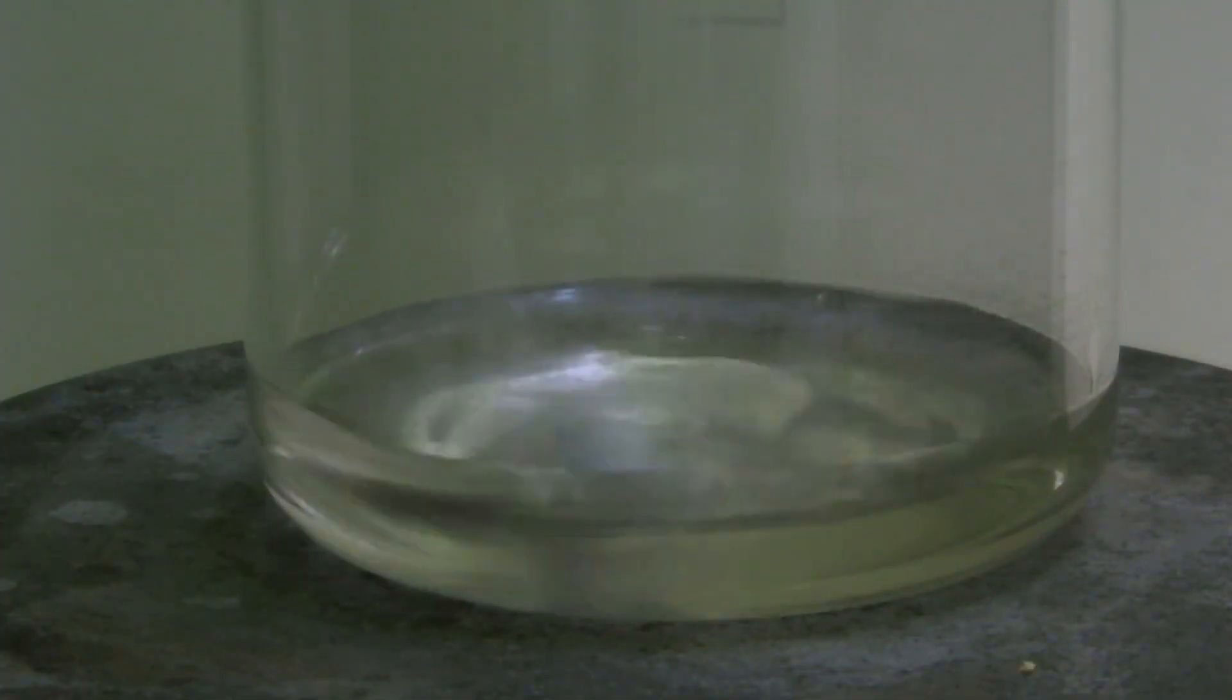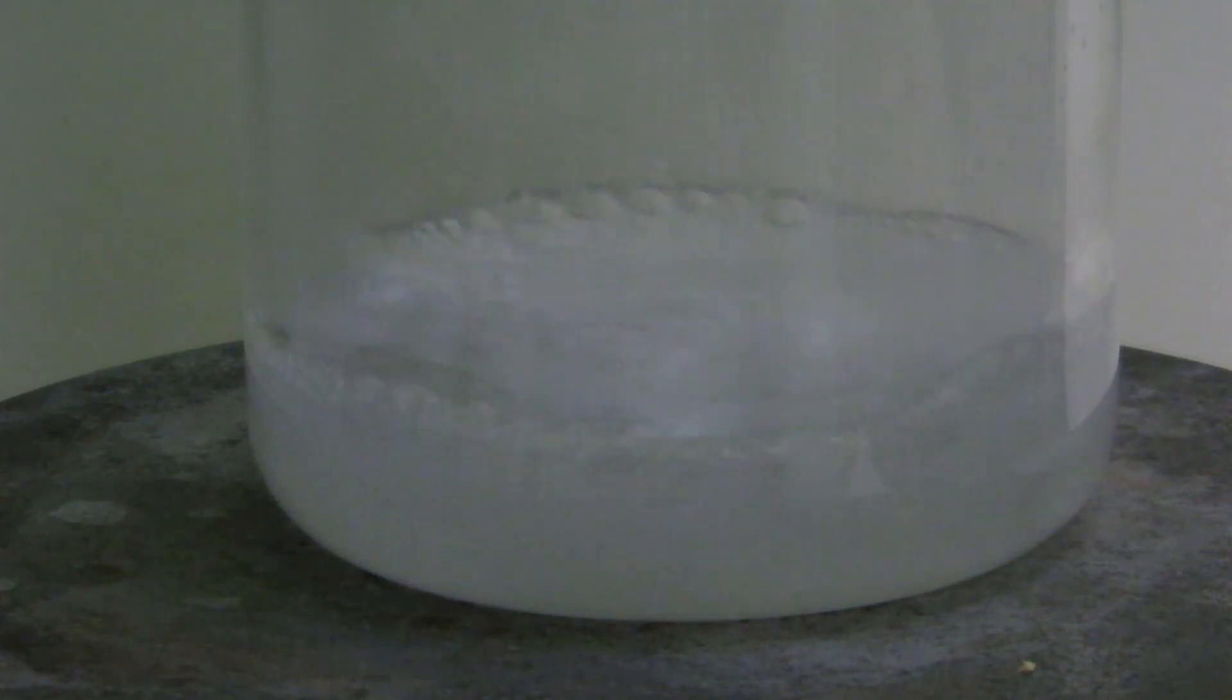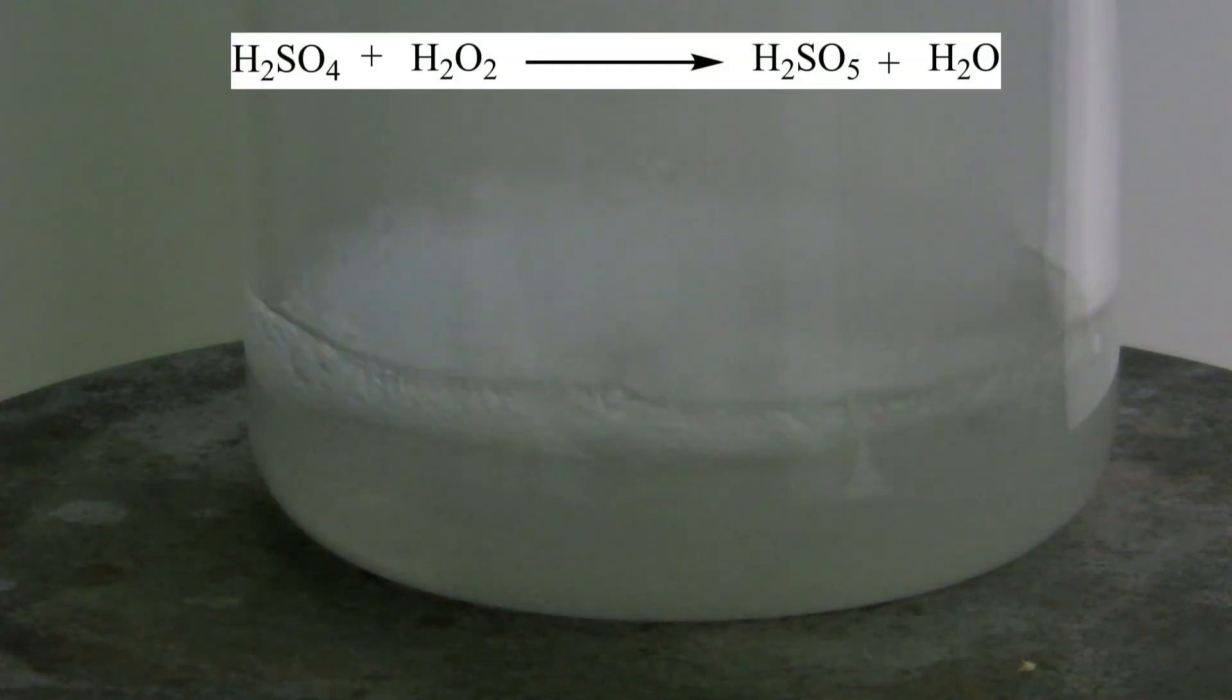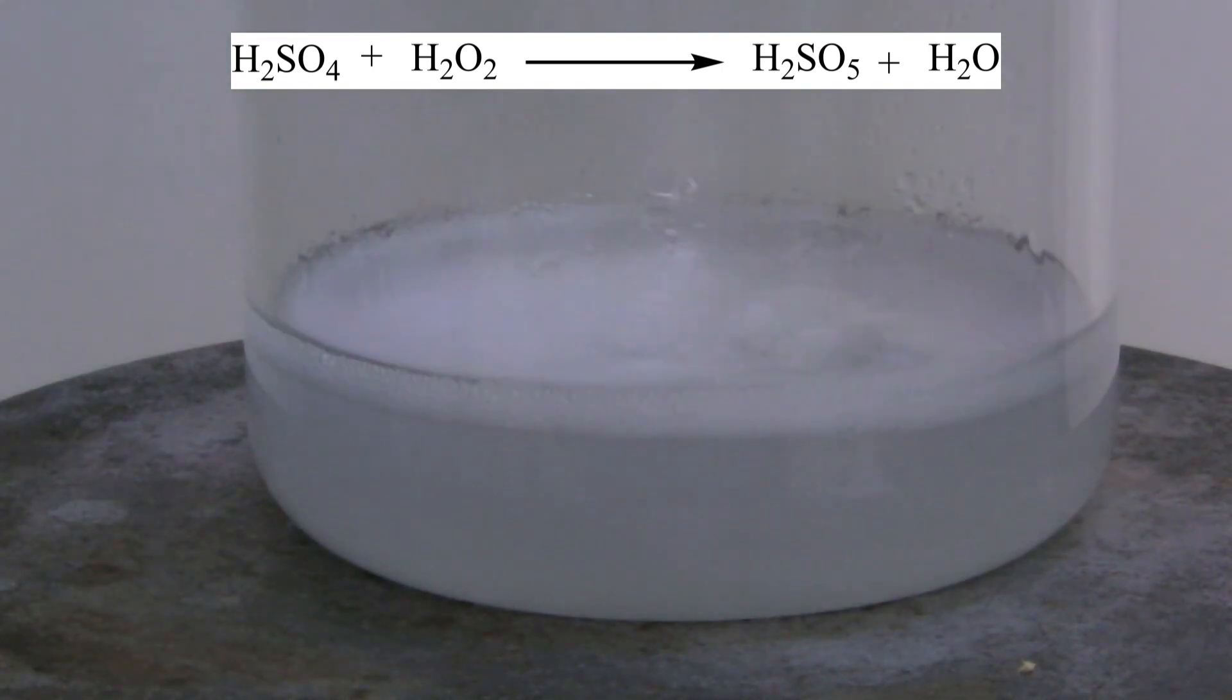During the addition, the mixture becomes very hot and gas formation can be observed. The sulfuric acid reacts with the peroxide to form peroxymonosulfuric acid and water. In these conditions, the acid is unstable, which is why oxygen is released.